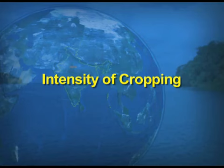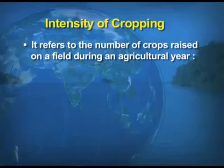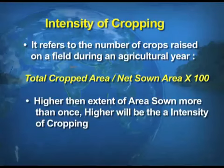The last topic for this section is intensity of cropping, which is very important given the shortage of land. It refers to the number of crops raised on a field during an agricultural year. It is calculated as: total cropped area divided by net sown area, multiplied by 100.